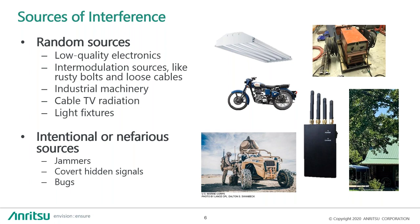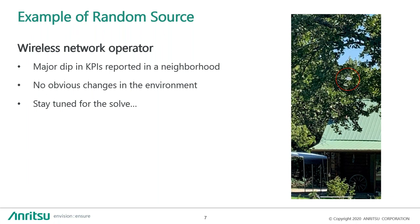Here's a couple of real-world examples. We had a wireless carrier in the US who was seeing a major dip in their key performance indicators — their KPIs. A neighborhood was reporting dropped calls or bad throughput. There was no obvious change in the environment that they knew of, so a team was sent out to try to solve that. I'm going to keep you in suspense on this particular one — we'll show a little bit later how this was solved.